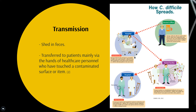C. difficile spores are transferred to patients mainly via the hands of healthcare personnel who have touched a contaminated surface or item. For example, if a person goes to a doctor's office and is prescribed antibiotics, that puts him at risk of C. difficile. One month later, he breaks his leg and goes to the hospital, and a healthcare worker spreads C. difficile to him after forgetting to wash their hands.